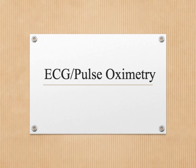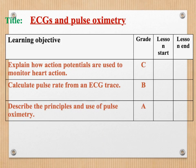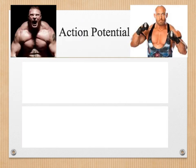This is the 7th video in the Edexcel P3 revision tutorials. Today we will be looking at ECG and pulse oximetry. In this tutorial we will look at explaining how action potentials are used to monitor heart action, how to calculate the pulse rate from an ECG trace, and the principles and use of pulse oximetry.